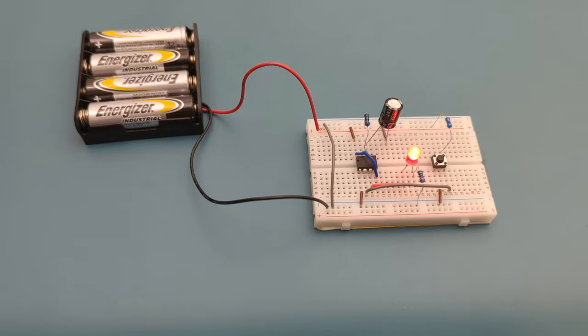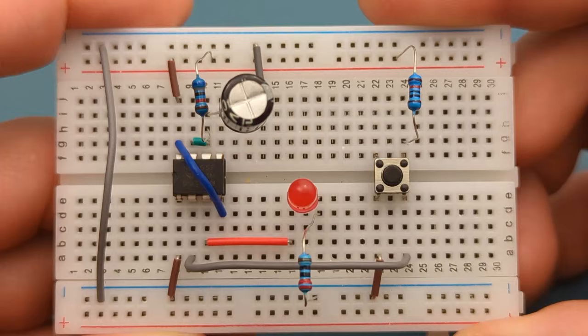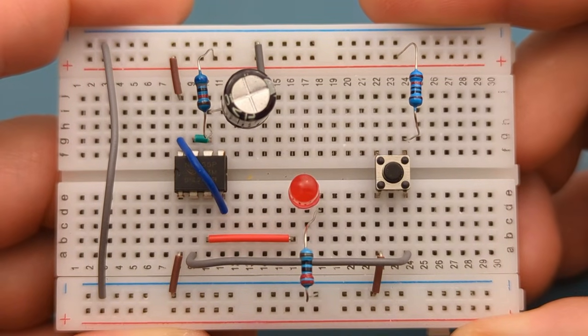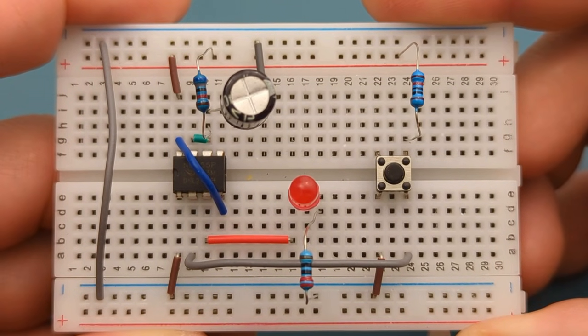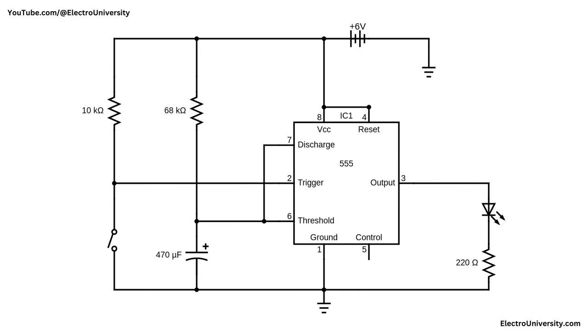How do you create a delay using the 555 timer? Hey guys, in this video I'll show you how to make an adjustable auto on and off delay timer using the 555 timer IC. Stay tuned to the second part of this video where I'll explain how this circuit works.